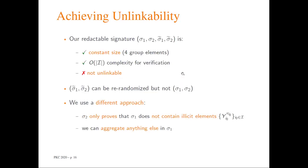So we get a new redactable signature scheme consisting of only four group elements, which is of constant size, and this signature can be verified by performing essentially k exponentiations, where k is the number of elements in the disclosed set i. But the problem is that right now this system is not unlinkable, so we need to improve it to achieve this property.